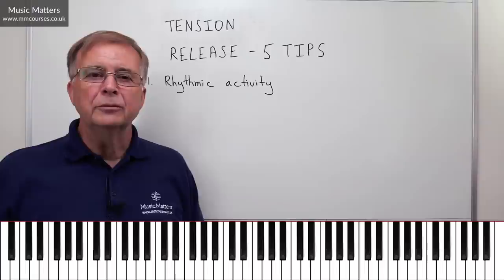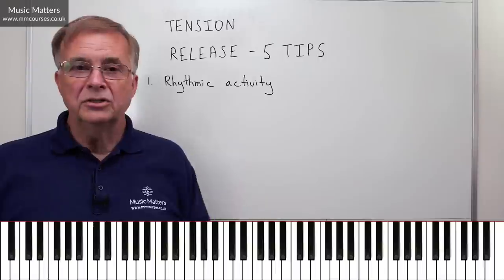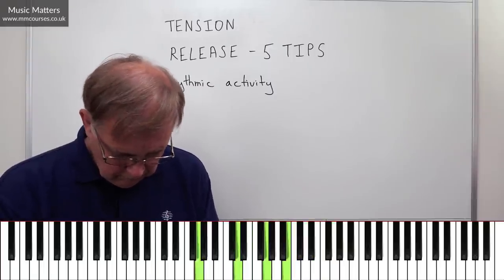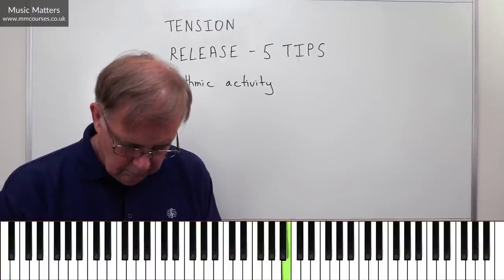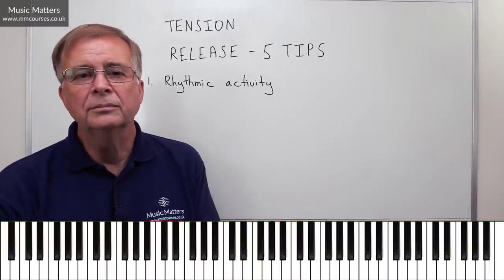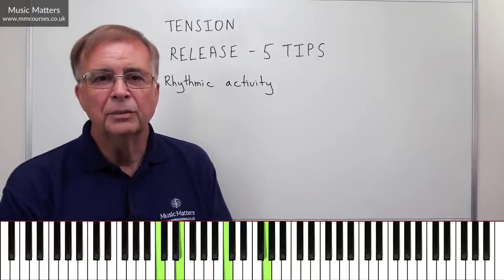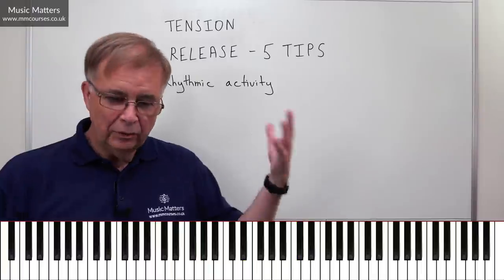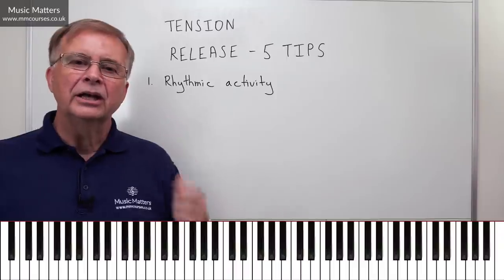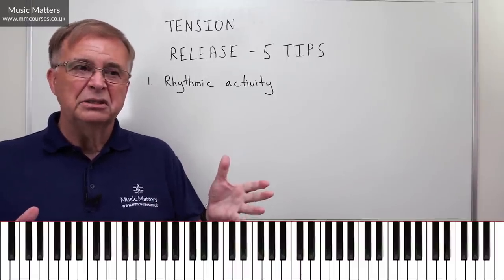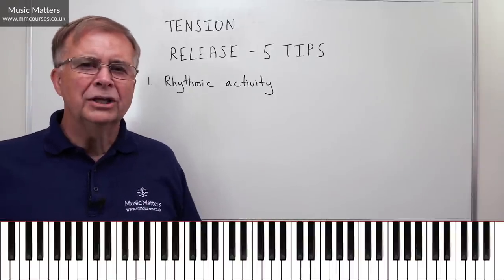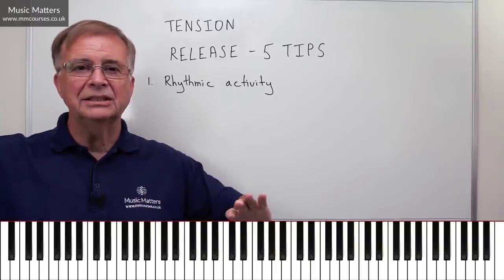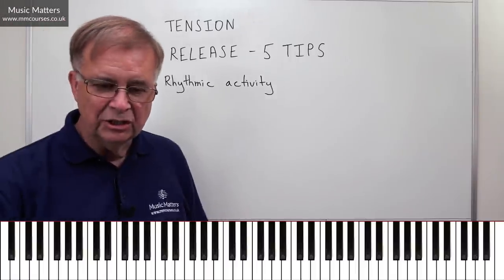If I'm in a place where I'm quite busy rhythmically and I want to move on to release, I'll do the opposite — I'm going to slow down the rhythm. And then maybe get to a place where it's much slower. Can you hear how the release has come about just by slowing down the rhythmic activity? When you look at a piece like a Beethoven sonata, you won't find it keeping the same rhythms all the way through. You'll find the rhythmic activity building in certain places and slowing down in others — that's doing a lot to generate tension and release.